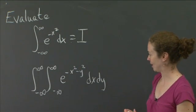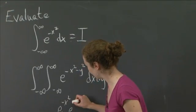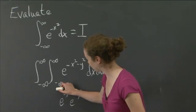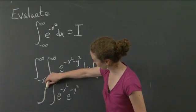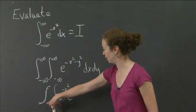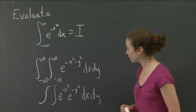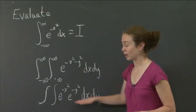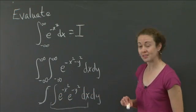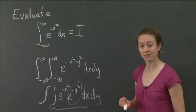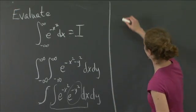Let me point out why that is. This term can be rewritten as e to the minus x squared times e to the minus y squared. Then I have two integrals, both from minus infinity to infinity, with a dx and a dy. Now the reason this quantity is just I squared is because the e to the minus y squared term — the inside integral — is independent of x, so I can move it out in front of the dx integral.